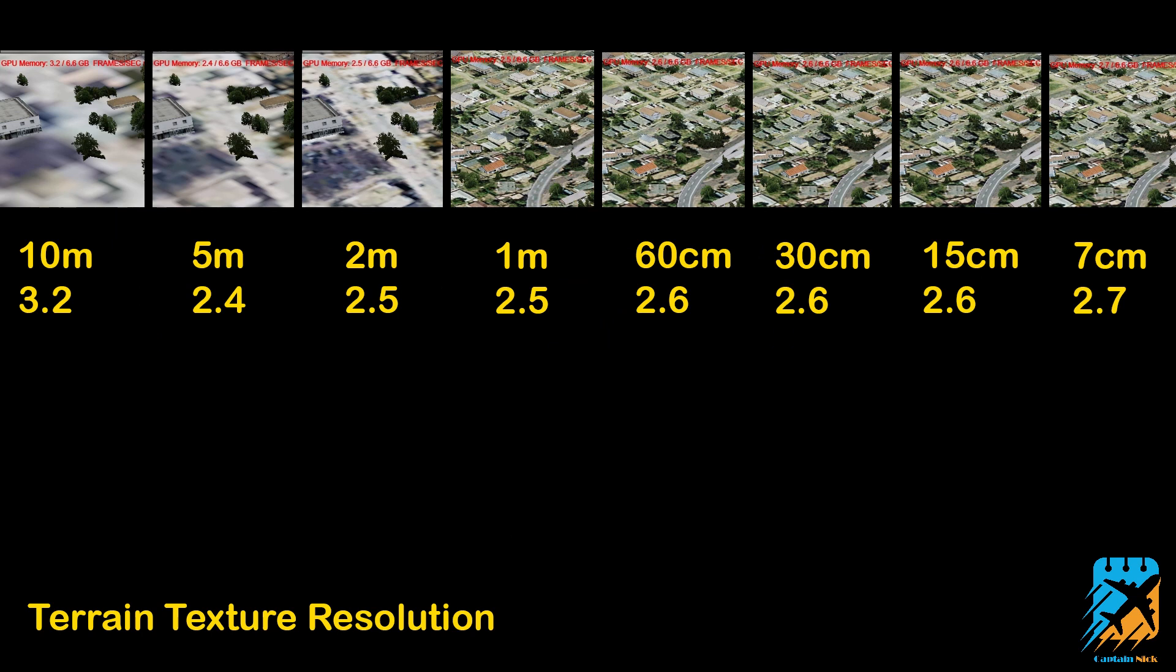Moving on to terrain texture resolution on that global page, we go all the way from 10 meters down to 7 centimeters. I'm going to chalk that 10 meter one up to some sort of a fluke or system error because there's no way that the 10 meter one uses up more VRAM than the rest of them. Not a huge difference across the board, a couple hundred megabytes. I didn't notice a huge difference between the 60 centimeter down to the 7 centimeter. But once again, this is using the default stuff. Maybe if you have scenery that actually has 7 centimeter terrain textures, it'd probably be a good idea to use them.